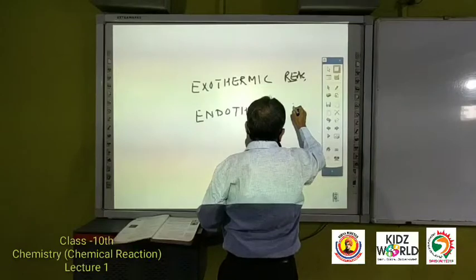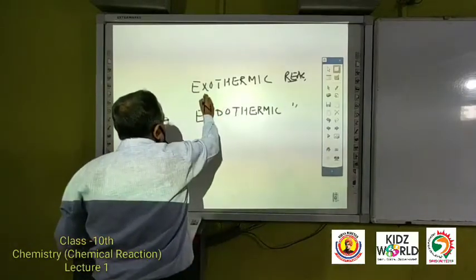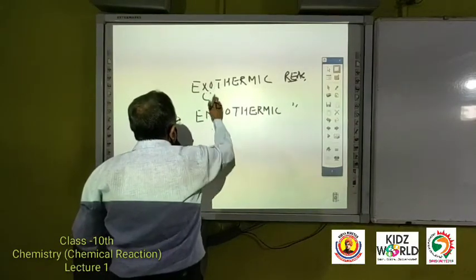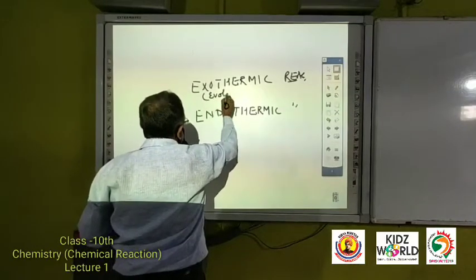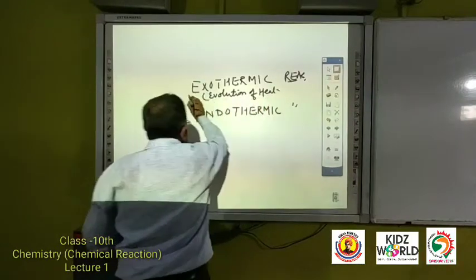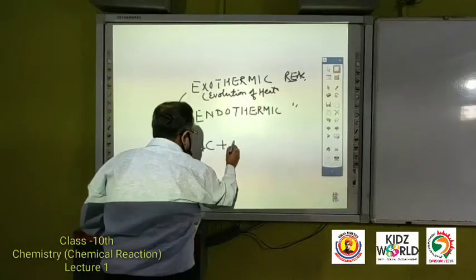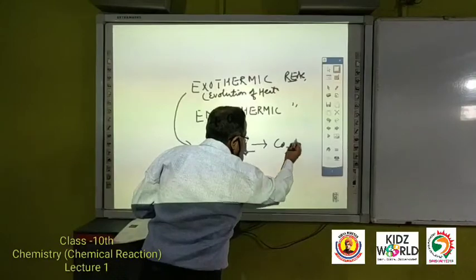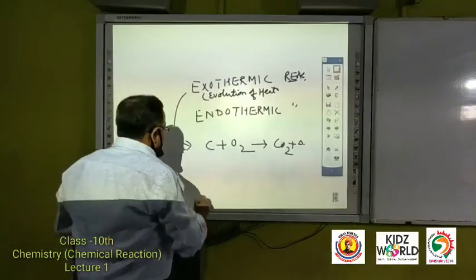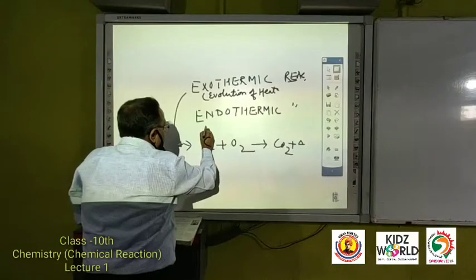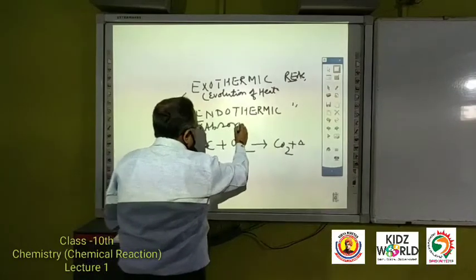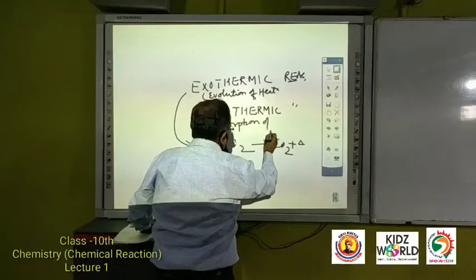Exothermic reaction versus endothermic reaction. Exothermic reaction involves the evolution of heat. Example: C plus O2 gives CO2. It is the example of exothermic reaction where heat is liberated.